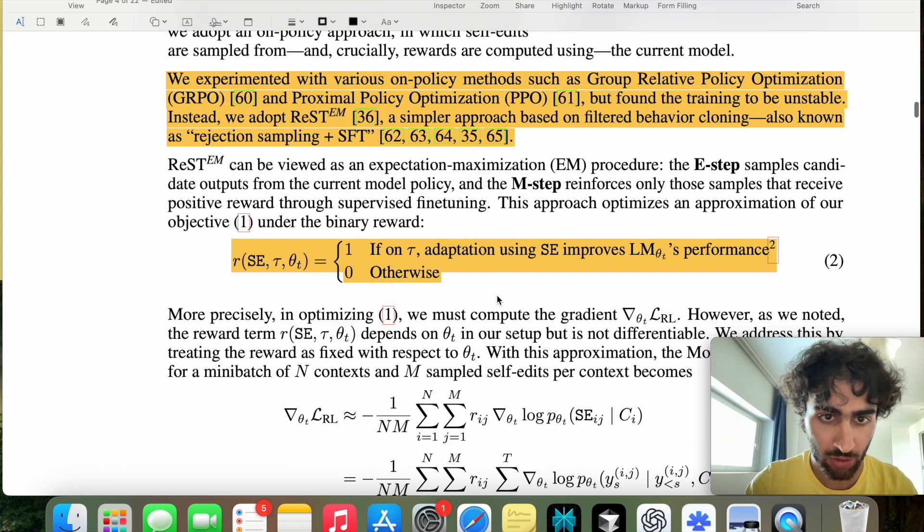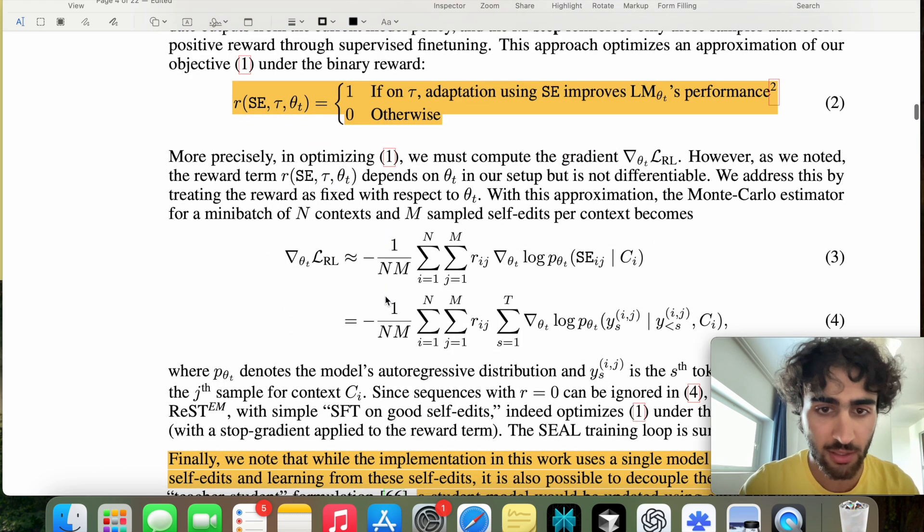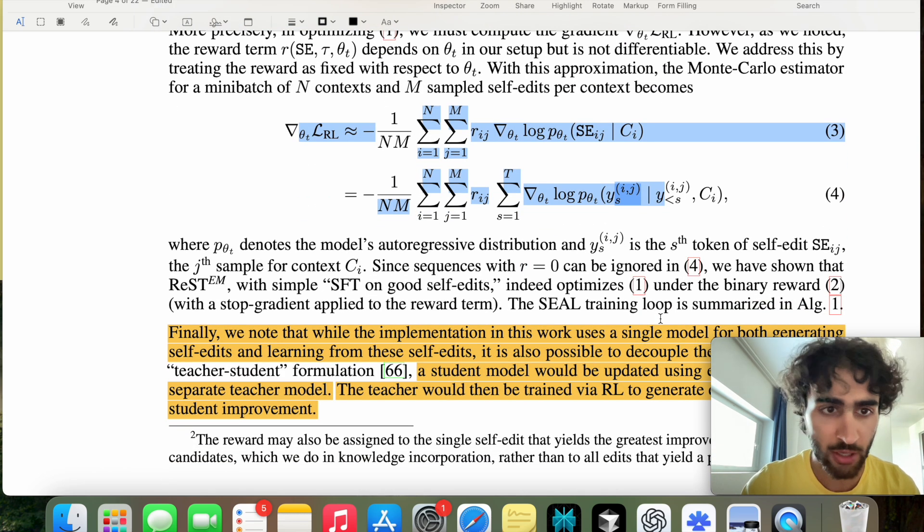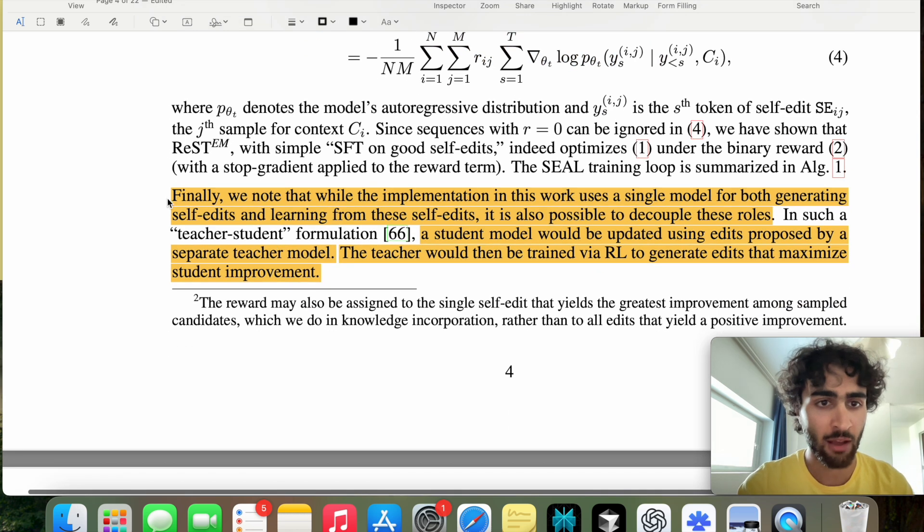And like I mentioned before, the reward is literally binary. So if I have no idea what's called tau, it should just be called the ground truth. But if the generation is the same as tau, then it's one, otherwise it's zero. Yeah, there's a lot of log probabilities going on here.